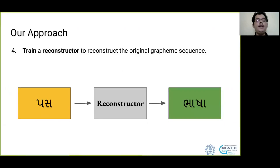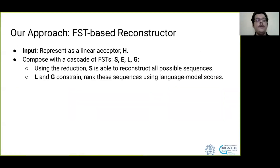Then we train a reconstructor to reconstruct the original grapheme sequence from "purser" to "hasha", for example. We represent the input to the reconstructor as a linear acceptor H, and compose it with a cascade of FSTs: S, E, L, and G.